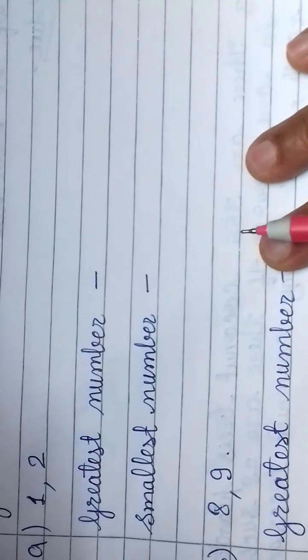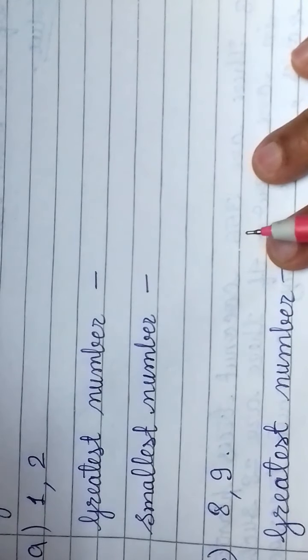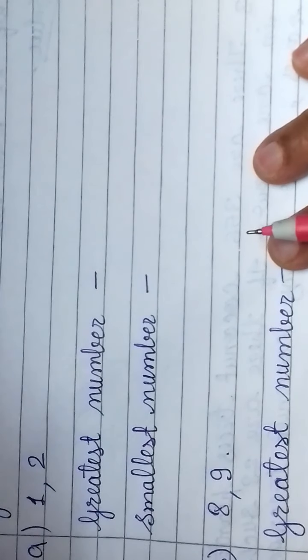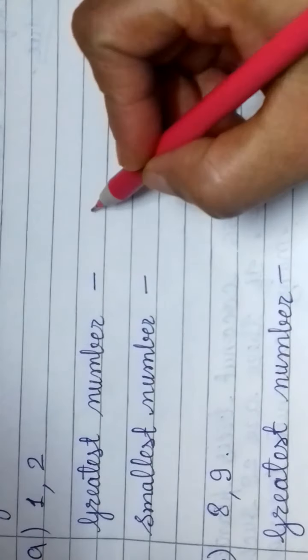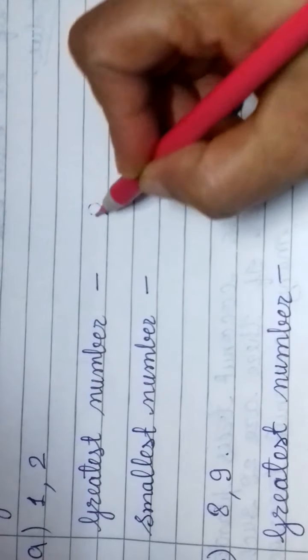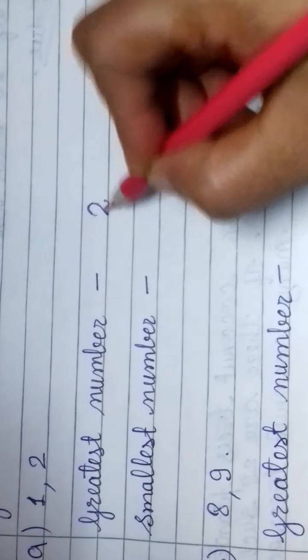So, greatest number we should make. For greatest number, we arrange the digits in descending order. So, first we have already written it 2 and then 1.